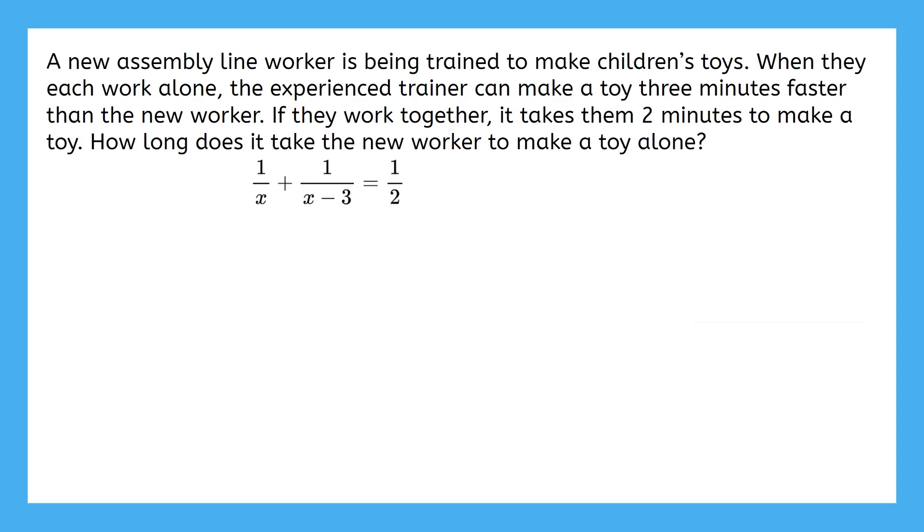Also, remember to interpret what your answer means. This LCM is a little longer, but since none of the denominators have any common factors, we just multiply them by each other. This gives us an LCM of two times x times x minus three to multiply by. Then we can cancel x in the first numerator and denominator. We can cancel x minus three in the second numerator and denominator, and two from the third numerator and denominator.